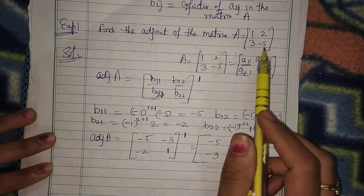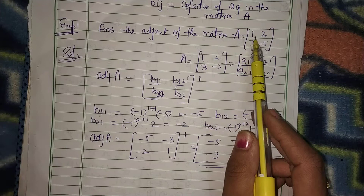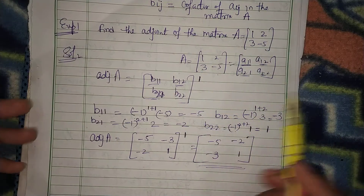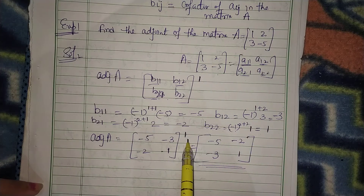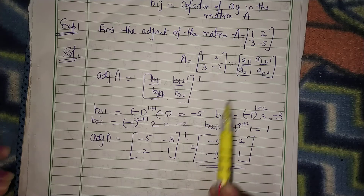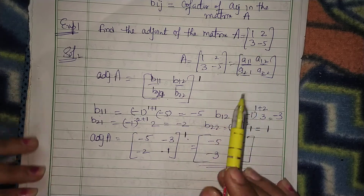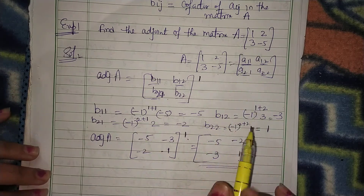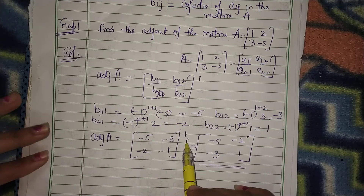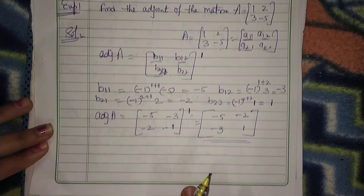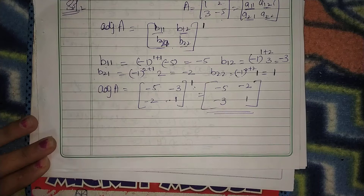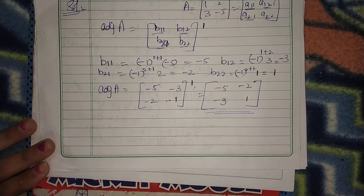So first of all what did we do? We replaced each element with its cofactor. Then the matrix that was formed — we took its transpose. This way you will find the adjoint of a matrix.